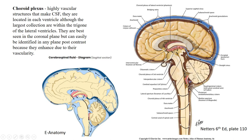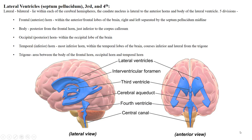Here is another great image from e-anatomy showing the same CSF pathway from a slightly different perspective. These two views — anterior and lateral — let you see what the lateral ventricles look like and give a really good look at the foramen of Luschka and those lateral apertures.